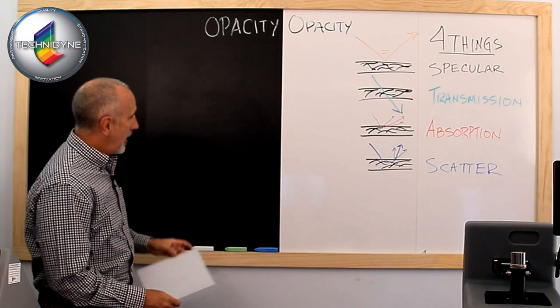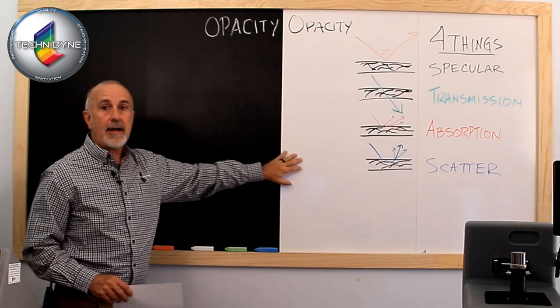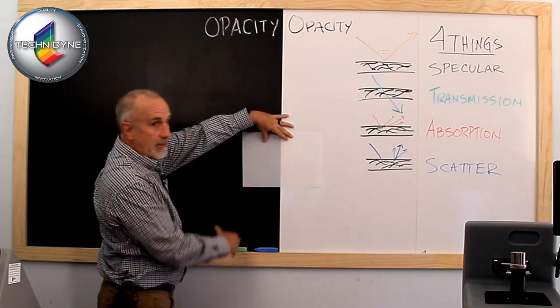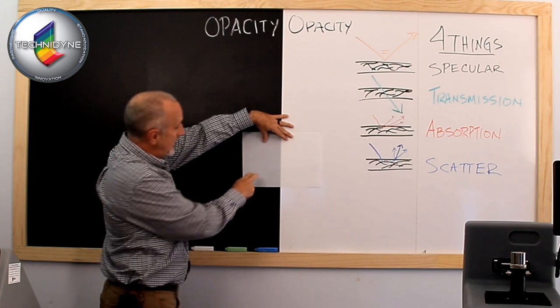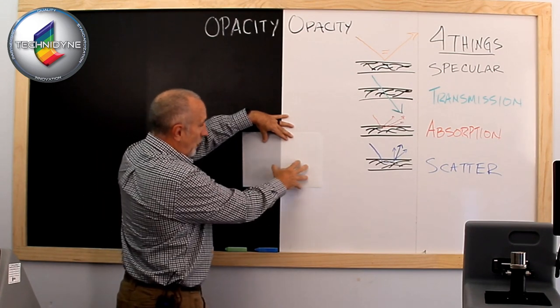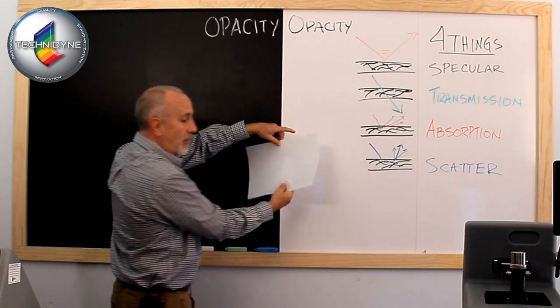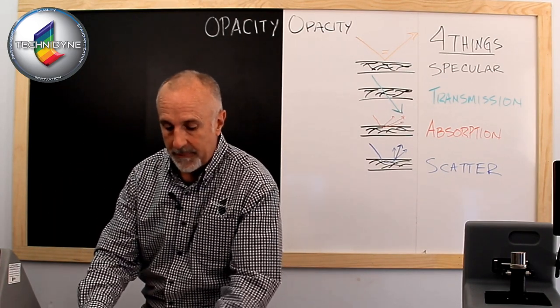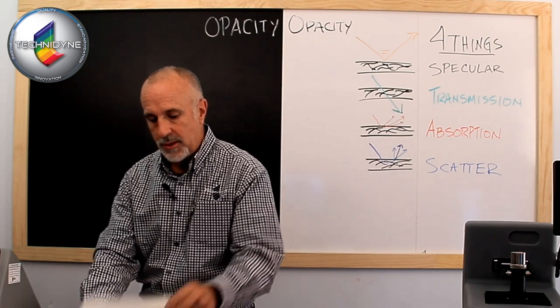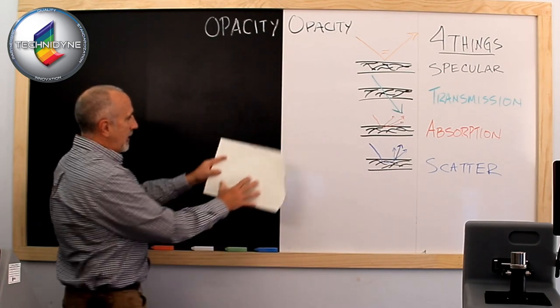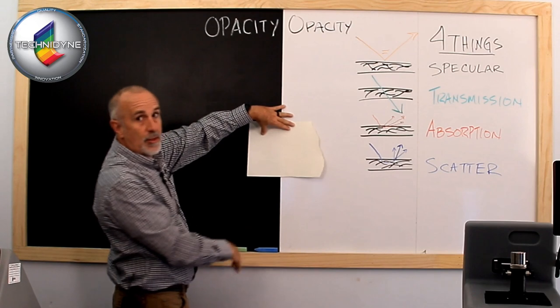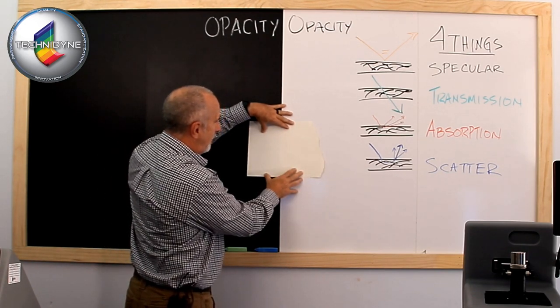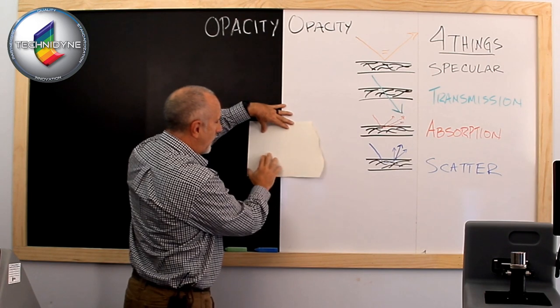So again, if we take this sheet, we have our great contrast here of black and white, and we put that on there and we see that what I visually see here is much darker than what I see here because this is not doing a very effective job of hiding what is behind it as opposed to some of this material, which is much more opaque.